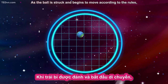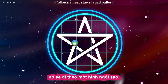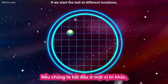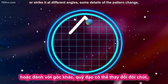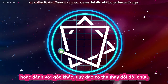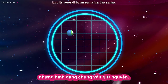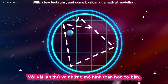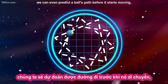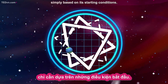As the ball is struck and begins to move according to the rules, it follows a neat, star-shaped pattern. If we start the ball at different locations, or strike it at different angles, some details of the pattern change, but its overall form remains the same. With a few test runs and some basic mathematical modeling, we can even predict a ball's path before it starts moving, simply based on its starting conditions.